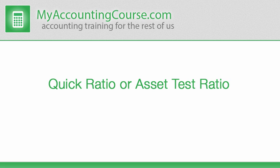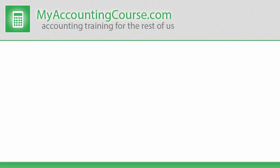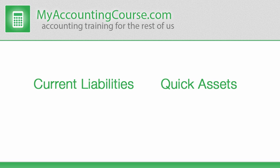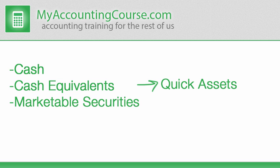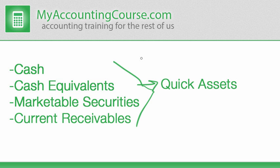The quick ratio, often called the acid test ratio, is a liquidity ratio that measures a firm's ability to pay off its current liabilities with only quick assets. Quick assets consist of cash, cash equivalents, and marketable securities — these are the most liquid assets a company can have. In other words, these assets are either cash or can be turned into cash within 90 days.